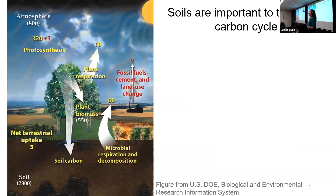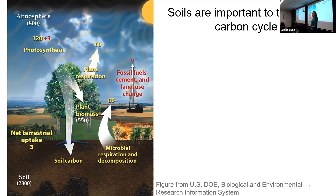Let's start by talking about the soil carbon cycle and how it is so important to the global carbon cycle. The soil carbon cycle starts in the atmosphere as carbon dioxide. Plants photosynthesize and fix that carbon into their own biomass — it becomes organic carbon. It ends up inevitably in the soil in one form or another, and from there it can become stabilized in the soil for a long period of time, or it can be emitted back out into the atmosphere, usually in the form of carbon dioxide.